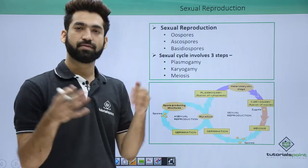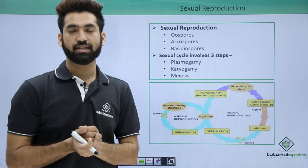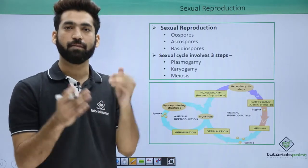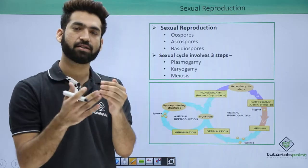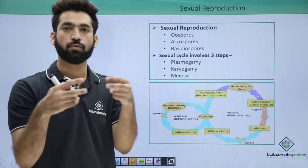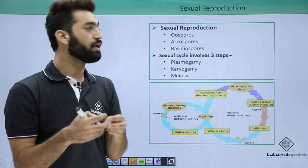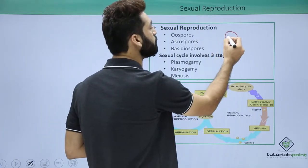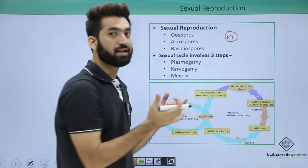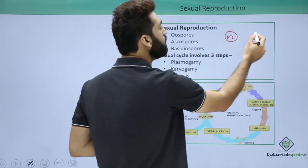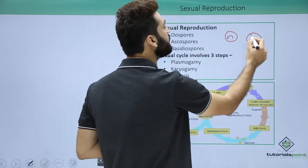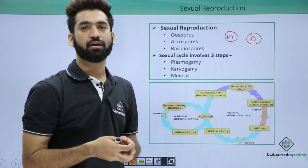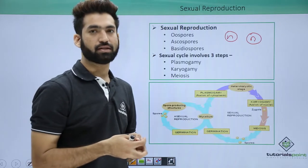Sexual reproduction in fungi means two strains will be coming close together and reproduction will occur between two fungi. The fungi are haploid — one fungus and another fungus, both haploid, must participate in sexual reproduction.